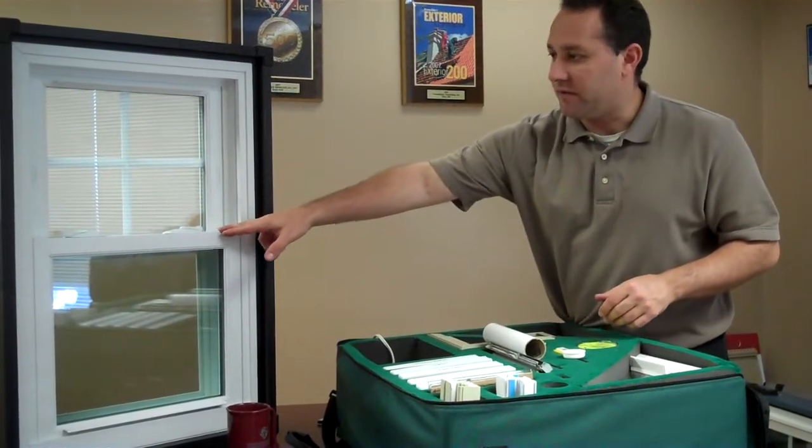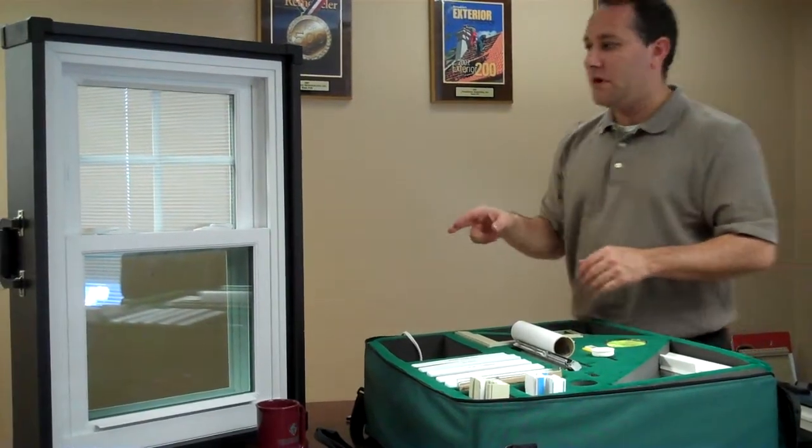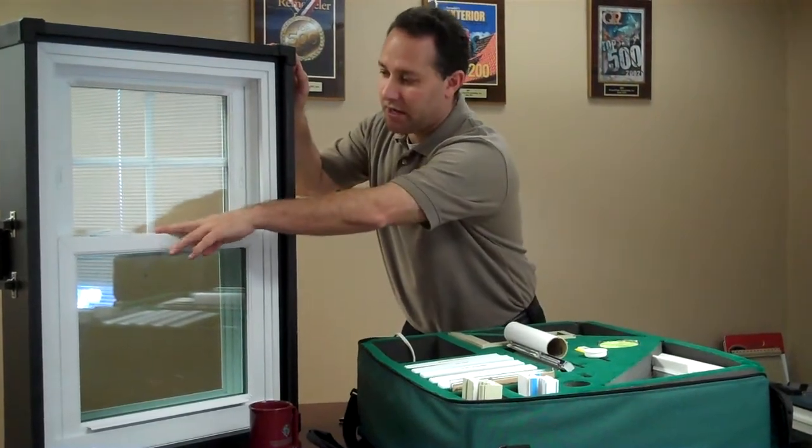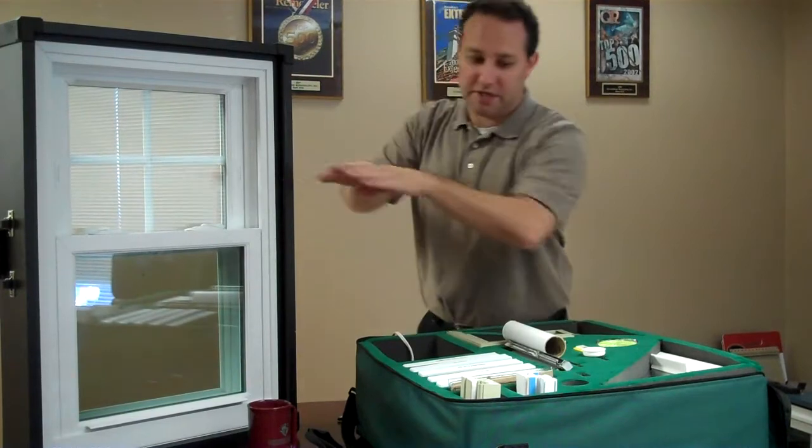If we look at the meeting rail as far as the mainframe goes, the meeting rail is where the top of the bottom sash and the bottom of the top sash come together.